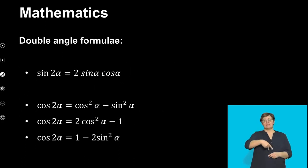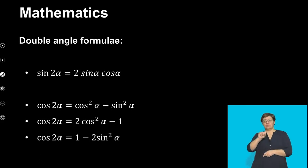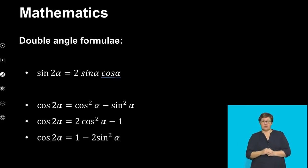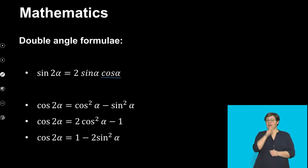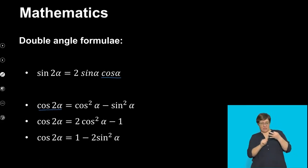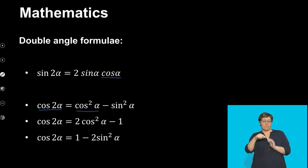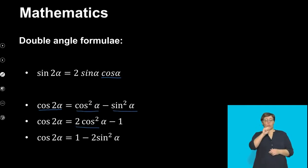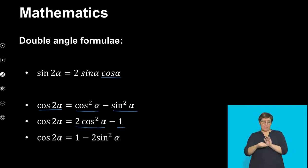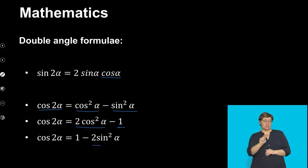The next formula is the double angle formulae and it's quite easy to remember. sin(2α) is equal to 2 sin α cos α. And for cos(2α), you have three different versions: cos²α − sin²α, or 2cos²α − 1, or 1 − 2sin²α.